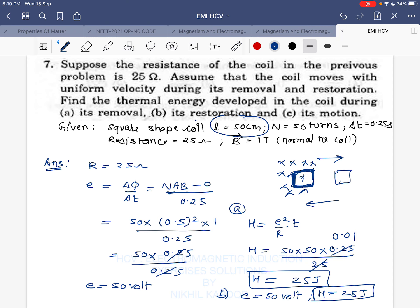The net heat produced during its motion - during removal from the field 25 joules is produced, during restoration 25 joules is produced. So obviously the net heat produced during complete motion will be 25 joules plus 25 joules, which comes out to be 50 joules. These are the answers to this question. Thank you.